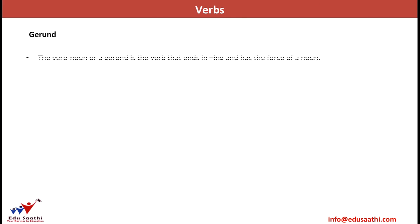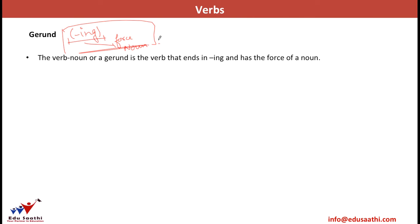Let's discuss the concept of gerunds. As participles are verbs that act as adjectives, gerunds are verbs that act as nouns. These are verbs that end in -ing and function as a noun. For example, 'Marketing is not easy.' Marketing is a verb, but it is not acting as a verb — it is the name of a process. What is not easy? That is marketing. So marketing is acting as a noun but it is a verb — it is a gerund here.